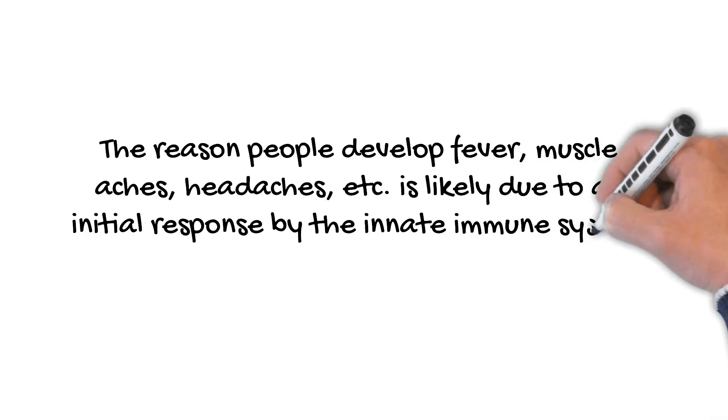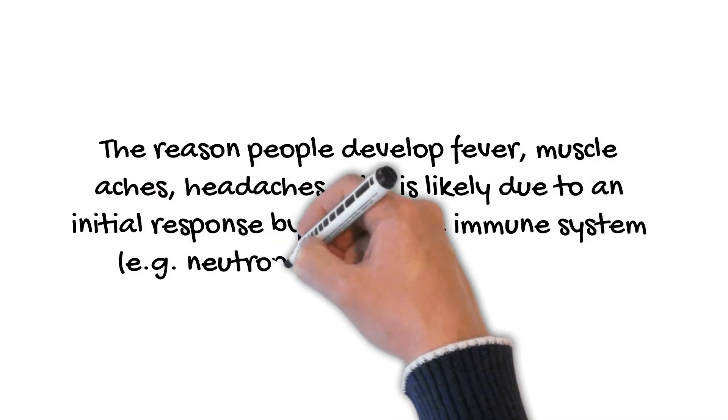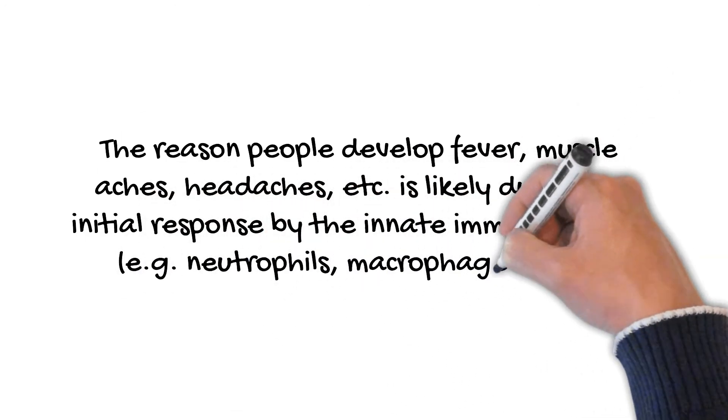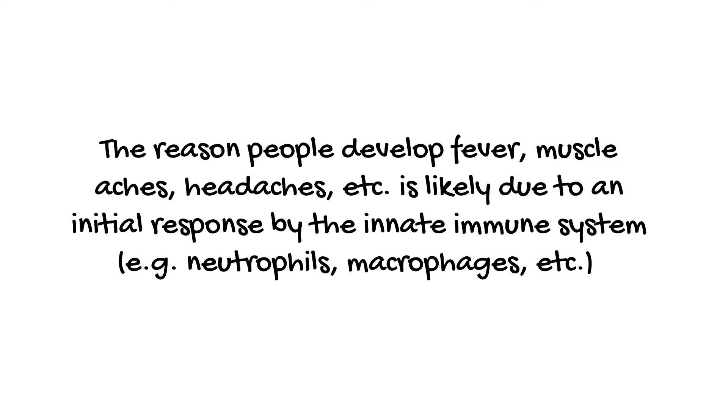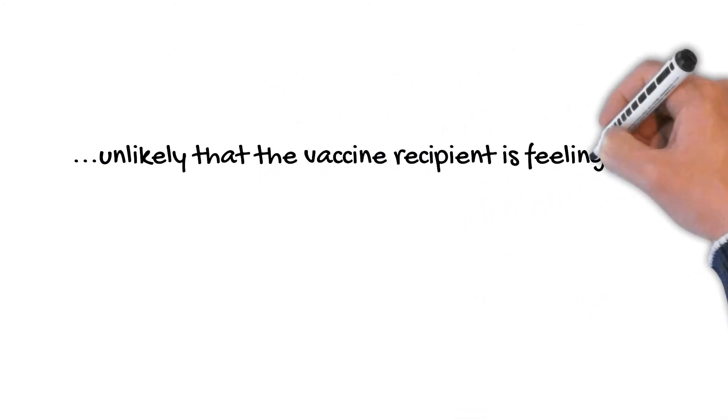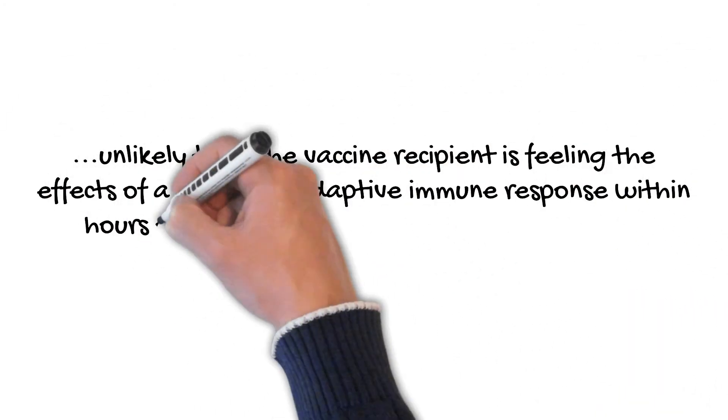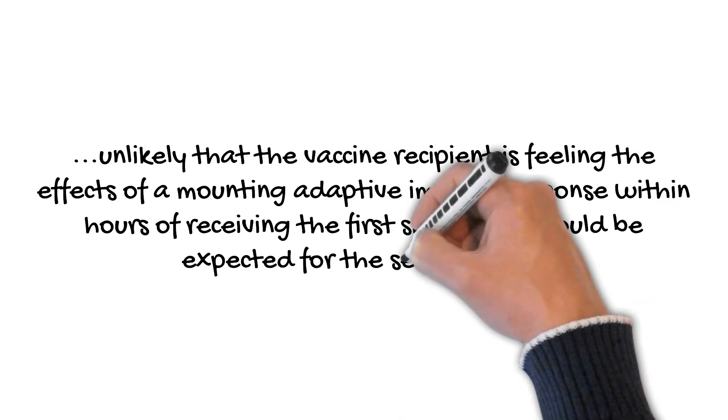The reason people develop fever, muscle aches, headaches, etc., is likely due to an initial response by the innate immune system. Anything entering the body is going to be recognized as foreign by granulocytes and monocytes. However, given that B cells will not begin to produce antibodies for up to 10 days, it's unlikely that the vaccine recipient is actually feeling the effects of a mounting adaptive immune response within mere hours of receiving the first shot.